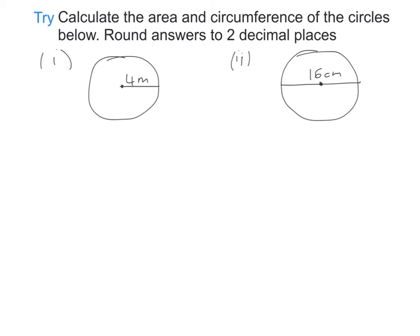I'd like you to pause the video and have a go at these two questions where you're asked to work out the area and perimeter of the circles, rounding all your answers to two decimal places. When you're doing this, also think about the correct units to use. Then play the video and check that you've done it correctly.